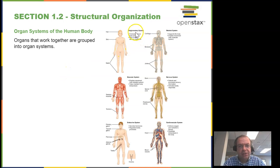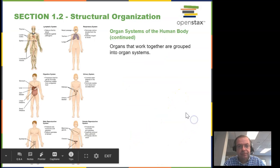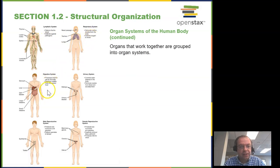We have the integumentary system, which is the skin; the skeletal system; muscular system; nervous; endocrine; cardiovascular; lymphatic; respiratory; digestive; urinary; and reproductive system.